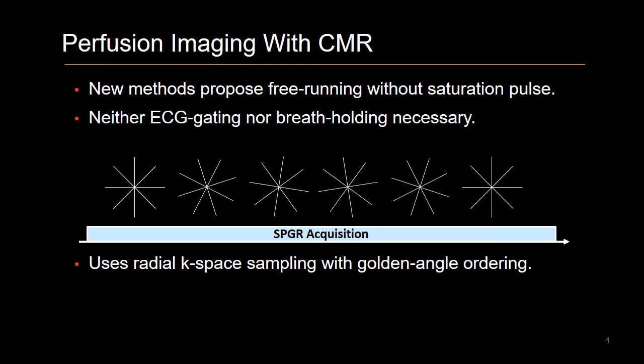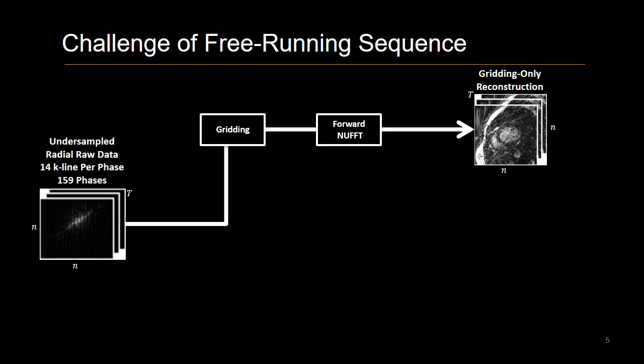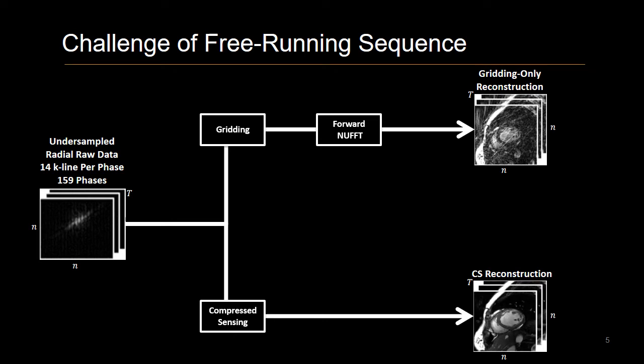However, these methods are not without their challenges. Due to the need for rapid acquisition, the K-space data will be under-sampled, and a naive reconstruction of simply gridding and an NUFFT will produce a streaking-artifact-infected image which is not suitable for clinical diagnosis. Currently, this issue is resolved using a compressed sensing reconstruction technique which exploits the sparsity and incoherence of the radial K-space to recover the image from the under-sampled data.